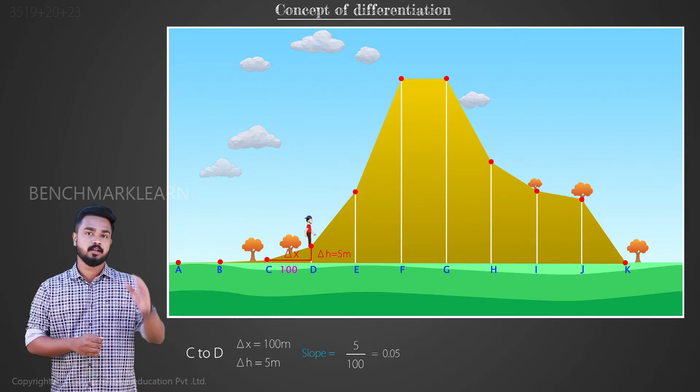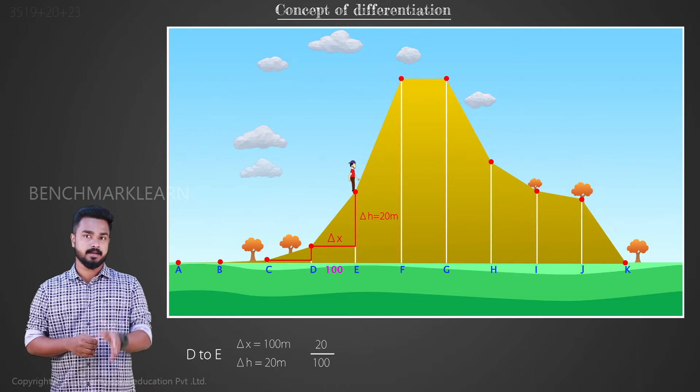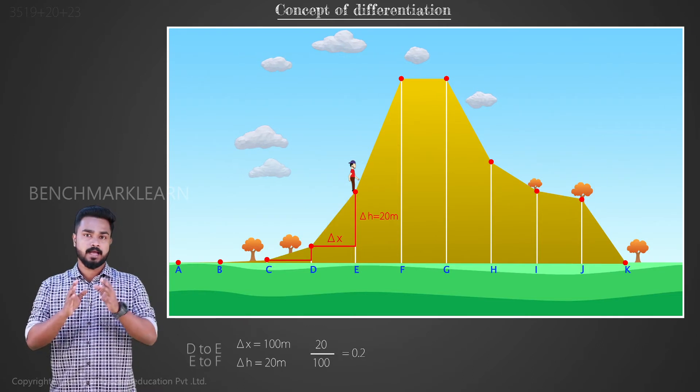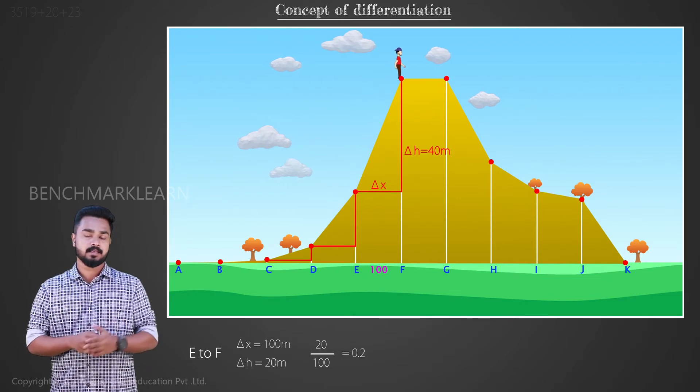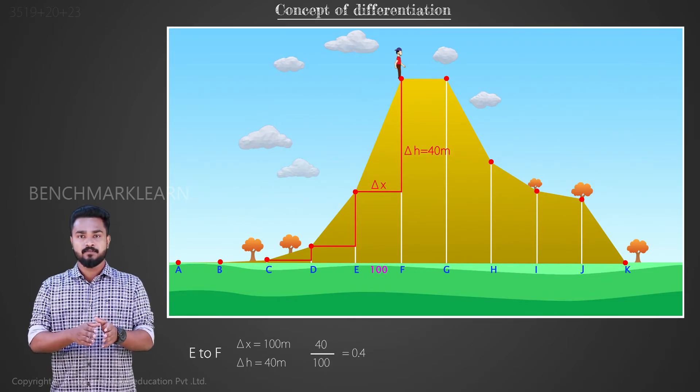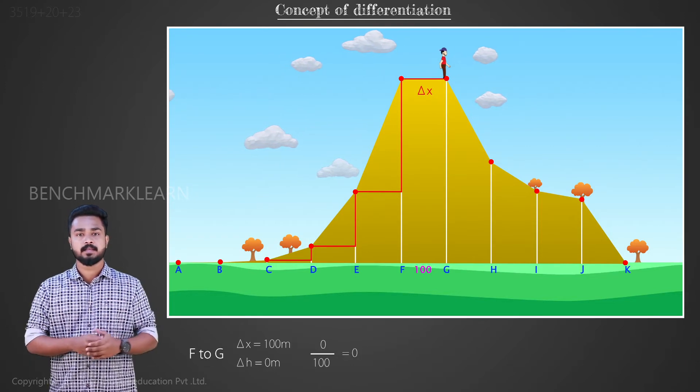Similarly, the slope between D and E is 20 by 100, that is equal to 0.2. And the slope of EF is 0.4. The surface from F to G is plain, so the slope here becomes 0.